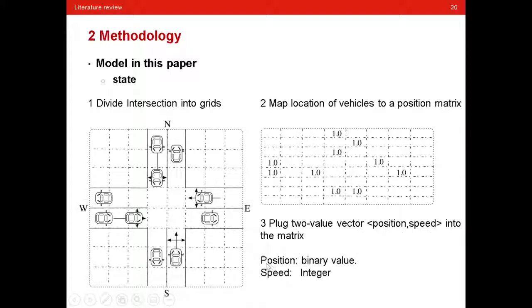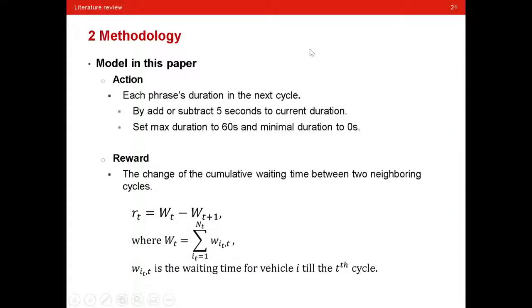The position is a binary value, which means that zero equals no vehicles in that grid, and one means that there is a vehicle in that grid. And the speed is recorded as an integer. Then, we come to the action and reward definition.